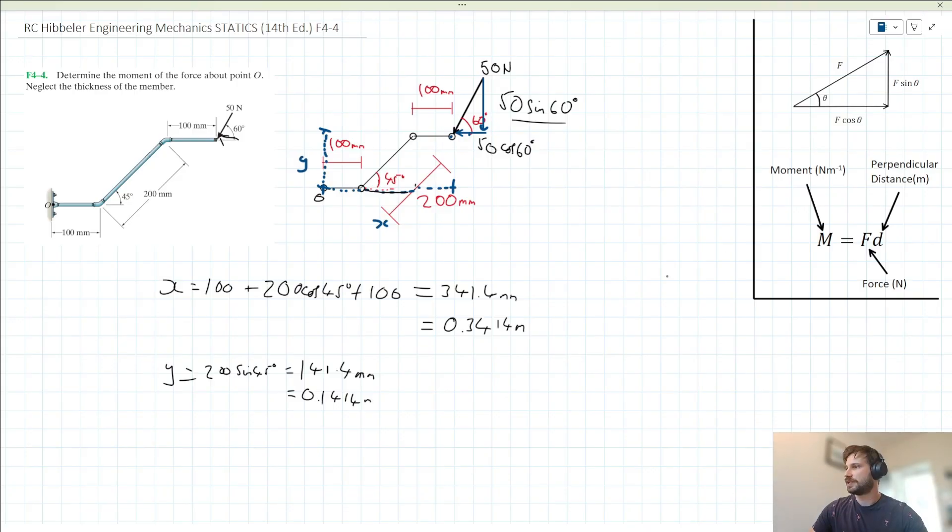We have the perpendicular distances for each component. Let's solve for the moments acting about point O. The sum of moments acting about point O, taking clockwise as positive: the vertical component acts a clockwise moment, so that's X times the force, 0.3414 times 50 sin 60.